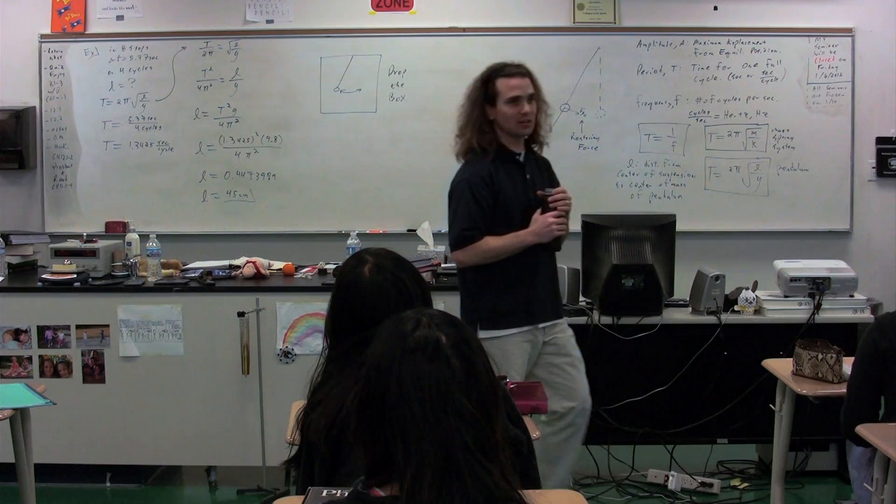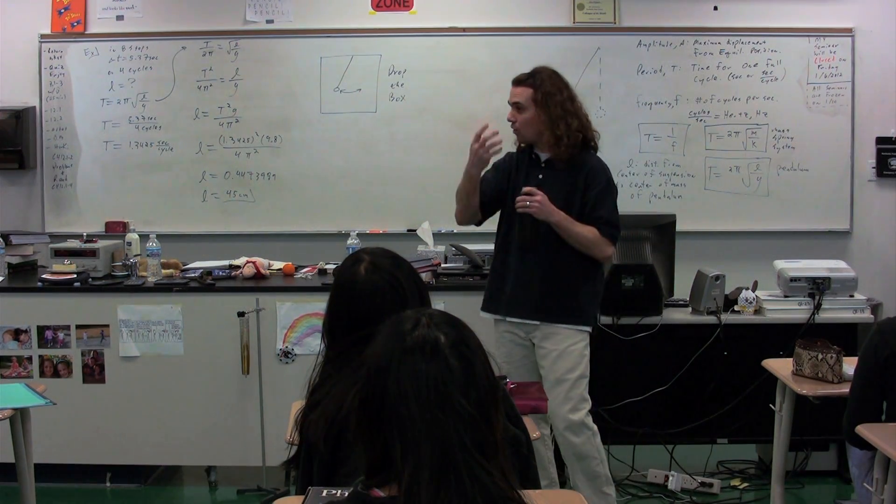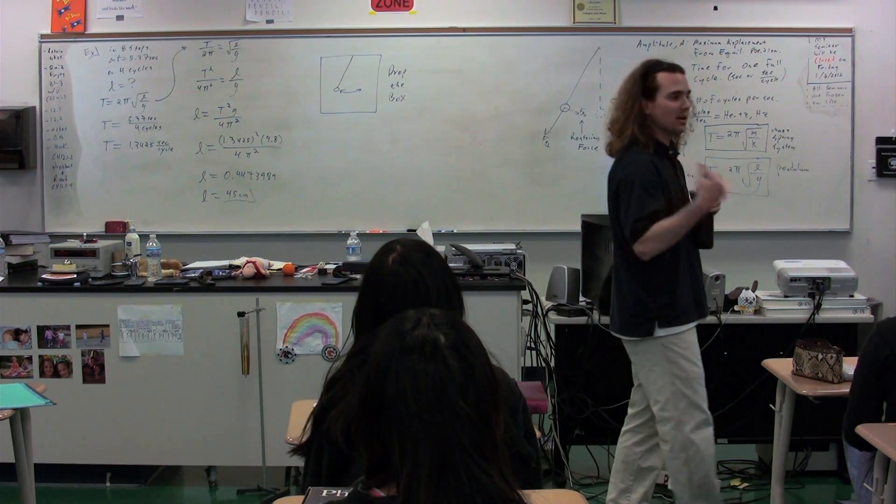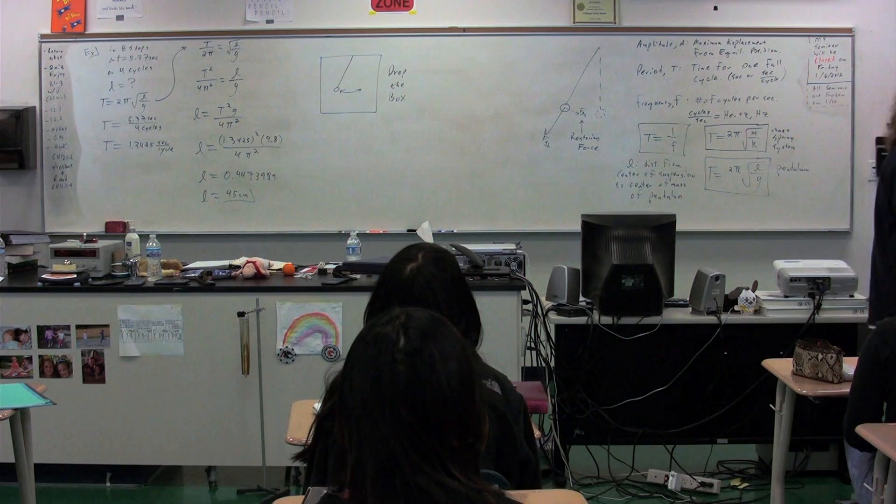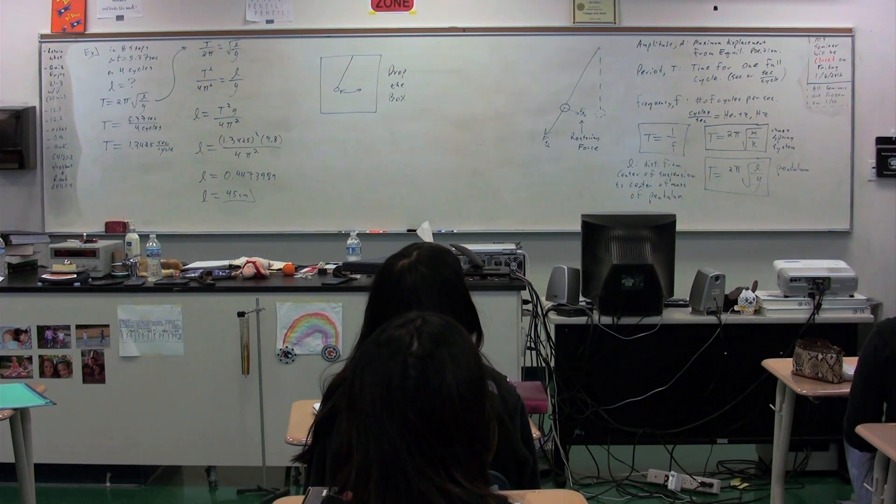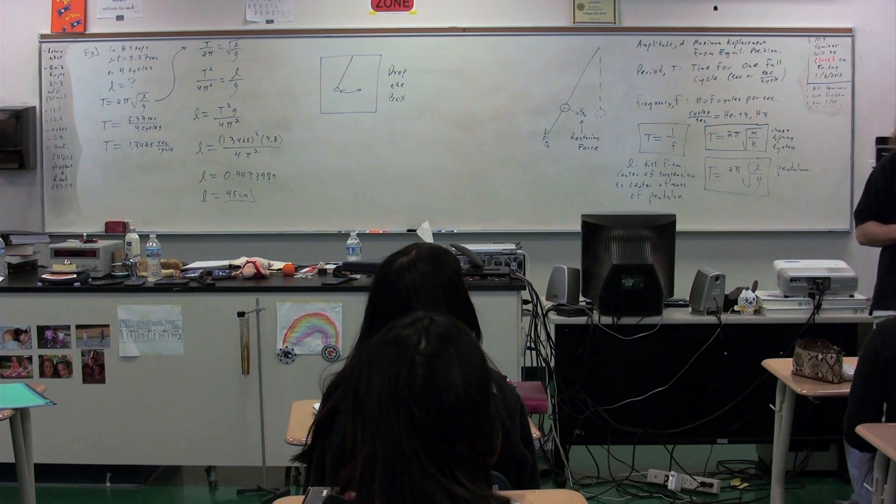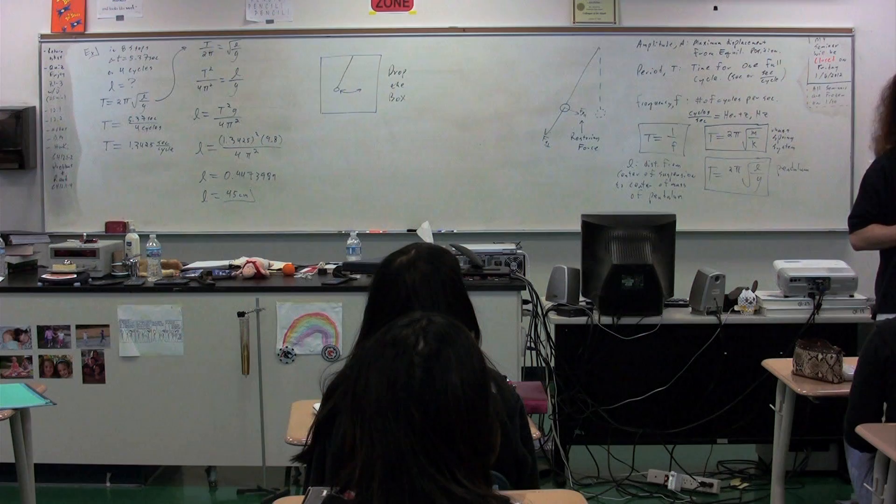If you think about it, the tension is essentially going to go away and the whole thing is going to fall straight down. Because the box and the pendulum are both in free fall, accelerating straight down, there's no reason for the pendulum to go anywhere but straight down.